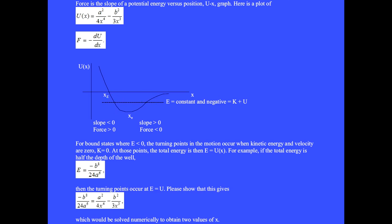E equals minus b to the eighth over 24a to the sixth, then the turning points occur at E equal U. Please show that this gives minus b to the eighth over 24a to the sixth equals a squared over 4x to the fourth minus b squared over 3x cubed, which could be solved numerically to obtain two values of x.